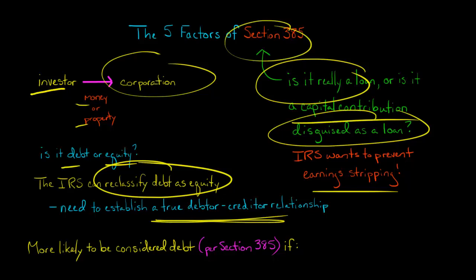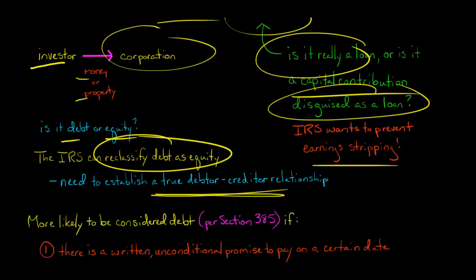Section 385 of the tax code lays out five factors that could be considered when determining: is this actually a loan? Is this actually debt?